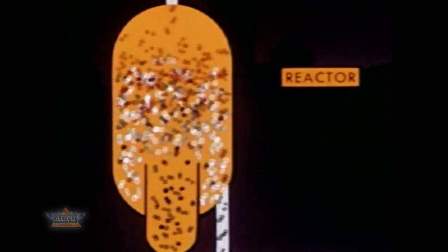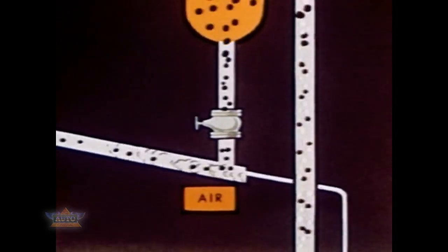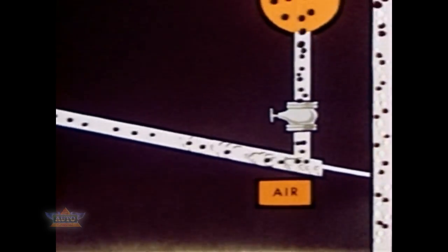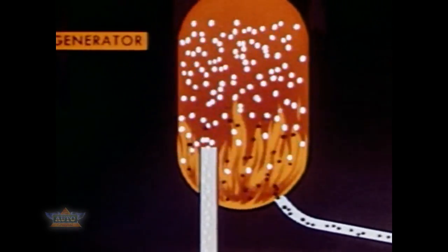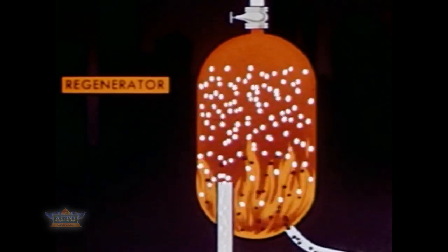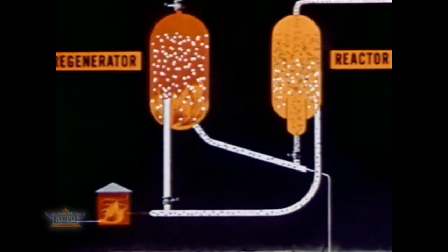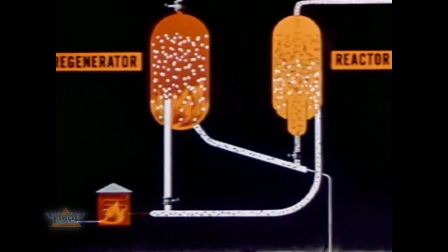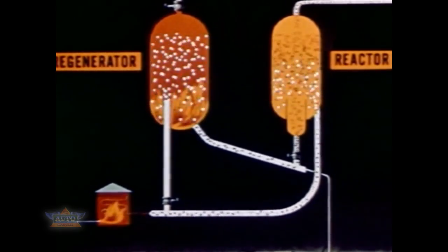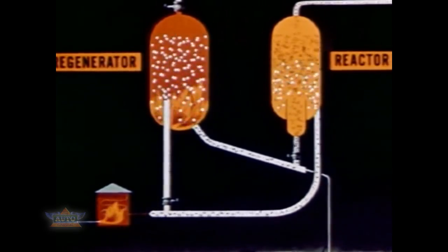As the catalyst becomes covered with coke, it becomes less active and is drawn off at the bottom. Air blows it through a pipe to the regenerator, where the coke is burned off. This reheats the catalyst, which again joins the flow of incoming oil. Here's the entire operation showing the complete cycle — notice that the same catalyst is used over and over again in this, the most modern method of gasoline manufacture.